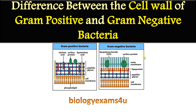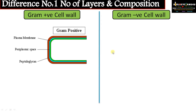Hi friends, once again back to biologyexams4u.com. Today the topic of our discussion is the difference between the cell wall of gram positive and gram negative bacteria in detail, starting with the number of layers and composition.